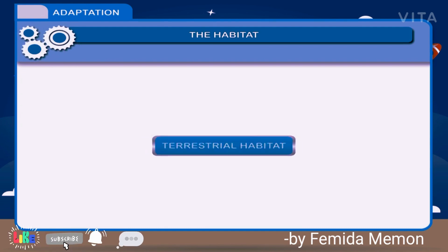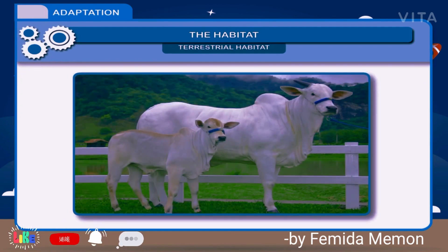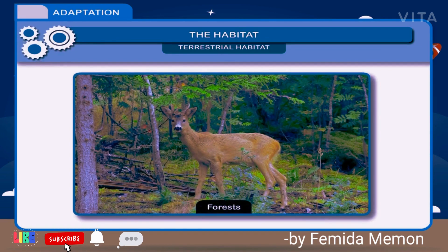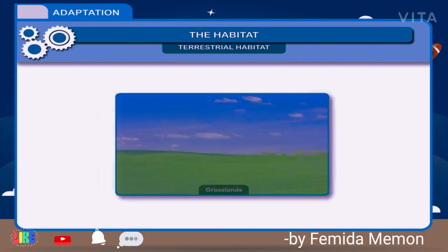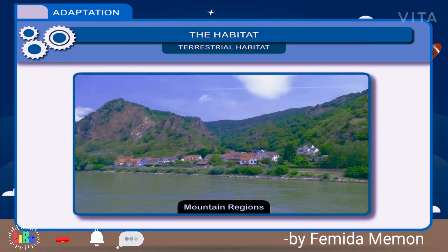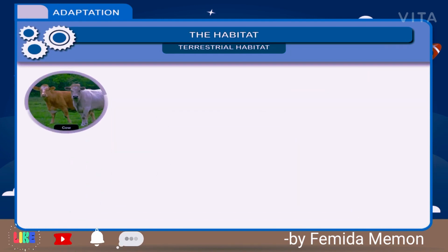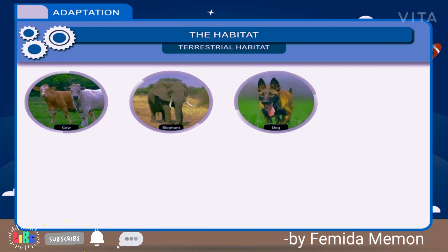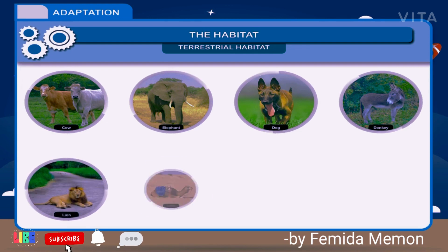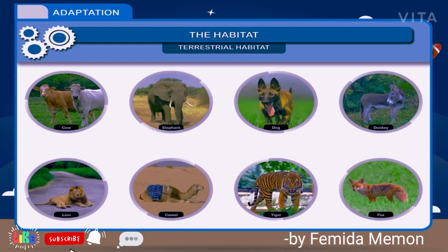Terrestrial habitat includes the habitat of living organisms which live and propagate on land. Some examples of terrestrial habitat are forests, grasslands, deserts, coastal and mountain regions. Organisms found in terrestrial habitat are called terrestrial organisms. Examples include cow, elephant, dog, donkey, lion, camel, tiger, fox, etc.